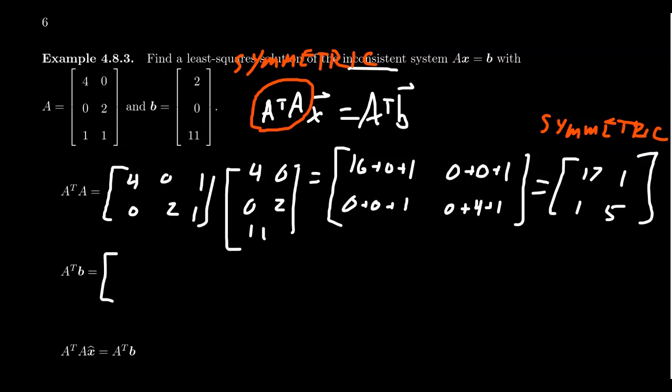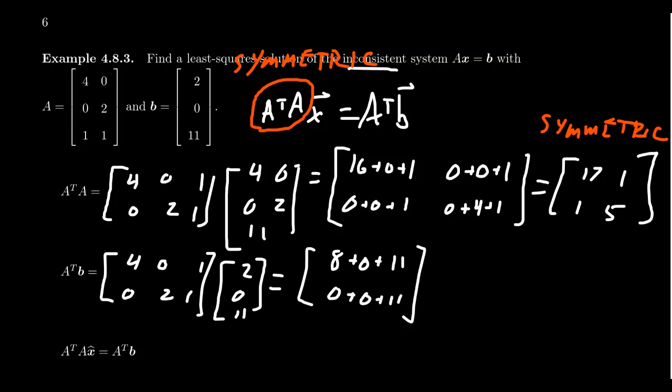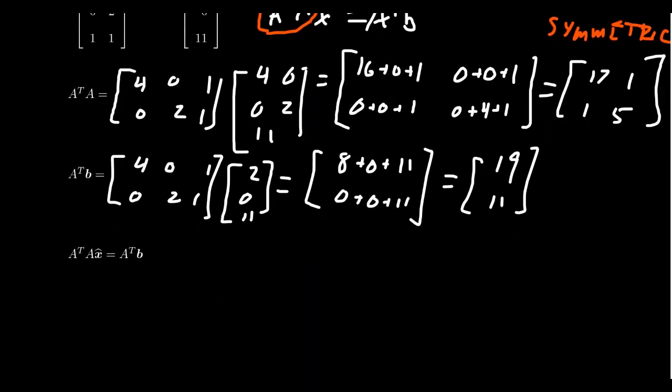If you take A transpose b, 4, 0, 1, 0, 2, 1, and you times it by the vector 2, 0, 11. If you multiply that through, you end up with 8 plus 0 plus 11. And then you'll get 0 plus 0 plus 11. So you get the vector 19 and 11, like so. So this gives us the normal equations.